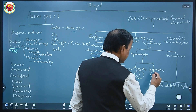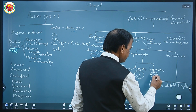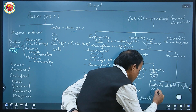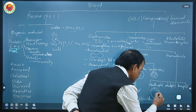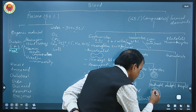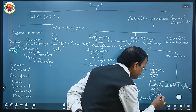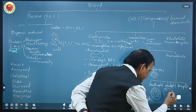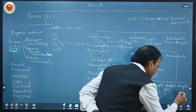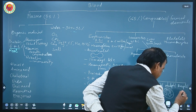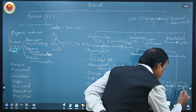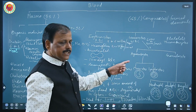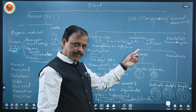Monocytes have a large-sized nucleus compared to the cell. Neutrophils have a multi-lobed nucleus with granular cytoplasm. Eosinophils have a bilobed nucleus with granular cytoplasm. Basophils have an S-shaped nucleus with granular cytoplasm. This is the classification of these blood cells.